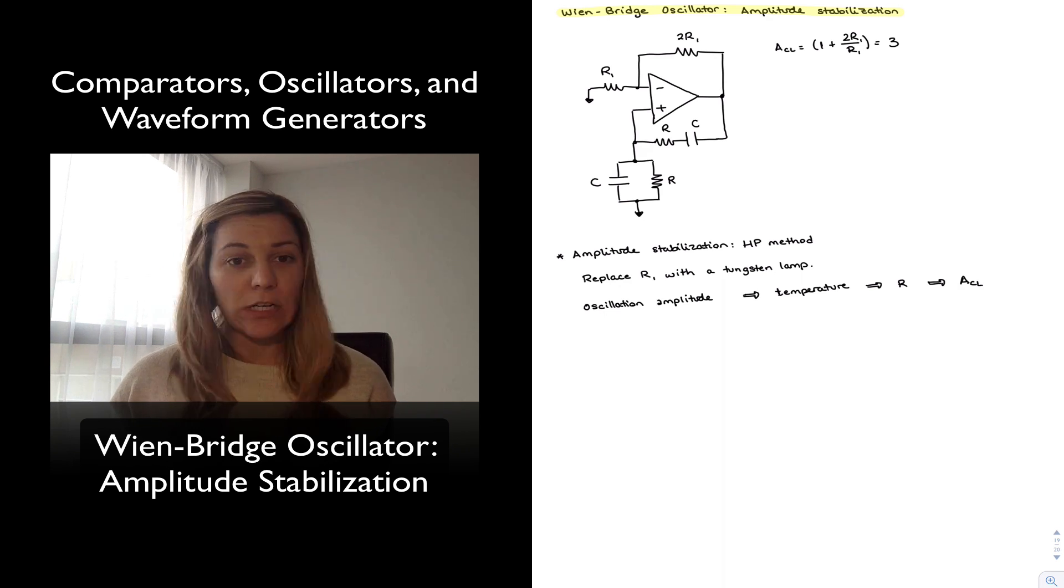And so fairly easy, I've designed a non-inverting amplifier with resistors R1 and 2R1. Since my closed loop gain is equal to 1 plus 2R1 over R1 in this case, I have a gain equal to 3.